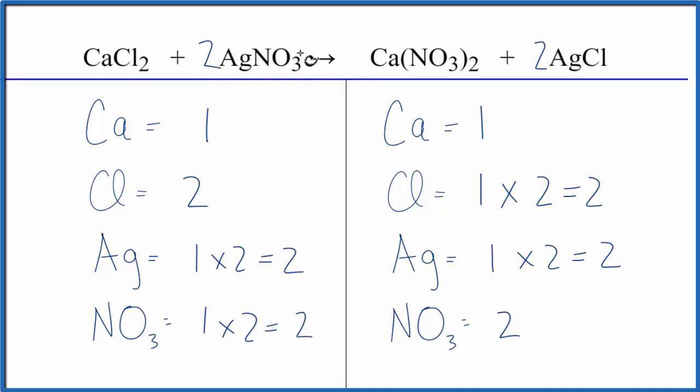So by counting this NO3 as one item, because it appears on both sides of the equation, makes it a bit easier. This is the balanced equation for CaCl2 plus AgNO3.